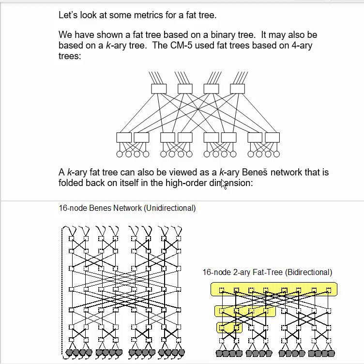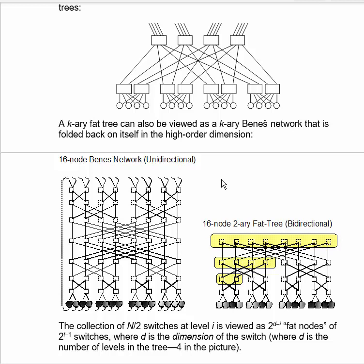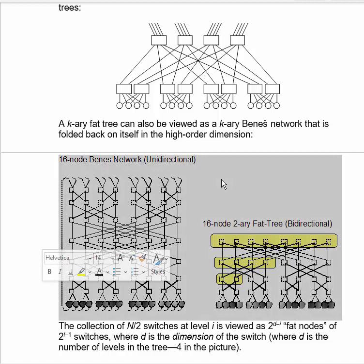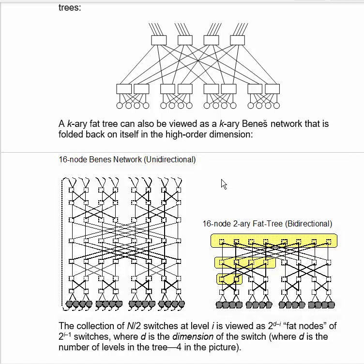It's also interesting to note that a fat tree can be viewed as a Benes network of the same arity that is folded back on itself in the high order dimension. And you can see that if you look at this diagram here. It looks isomorphic to the lower portion of this diagram over here, to the lower portion of the unidirectional Benes network. So if you're going to go on a Benes network, let's say from there over to there, what you do here is you go up there, and then you reflect and start coming down the links toward the leaf node, and then you get to the leaf node.